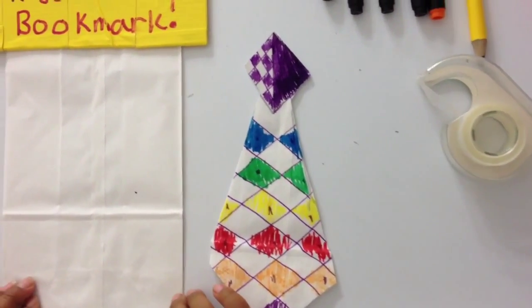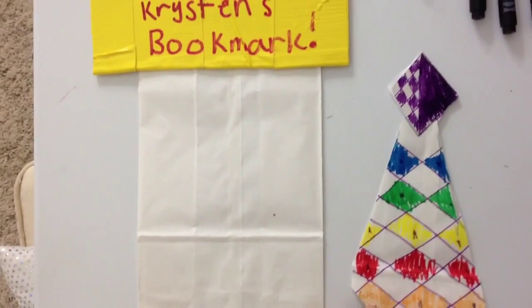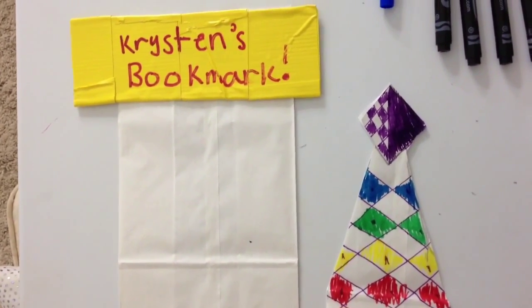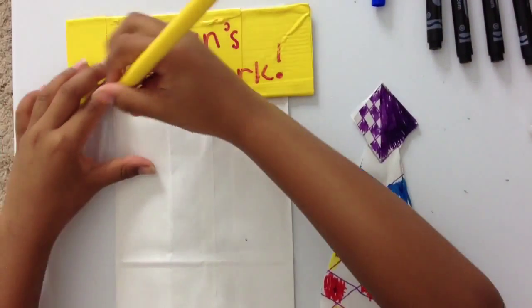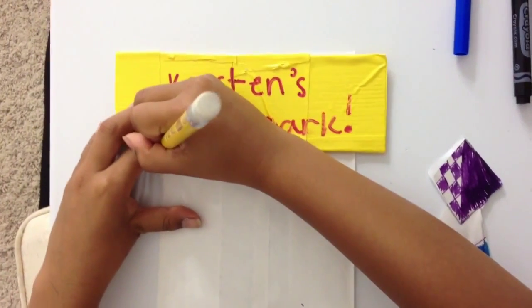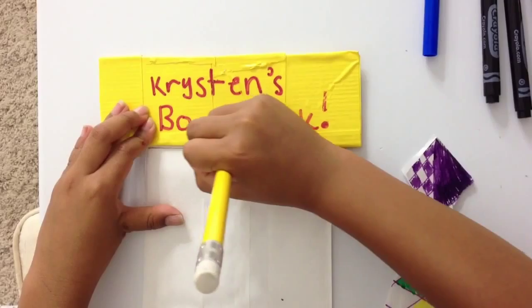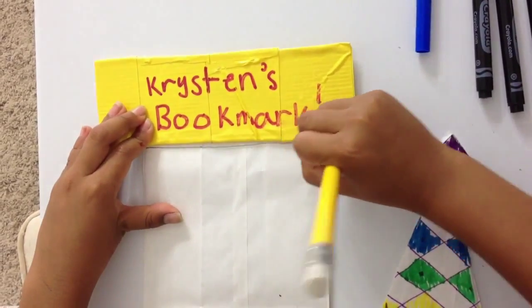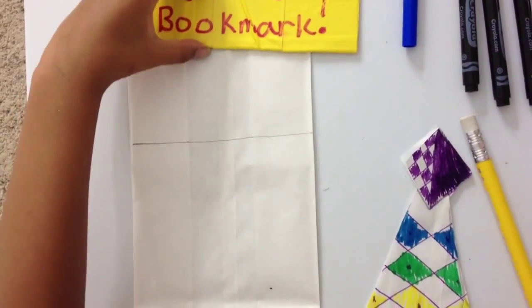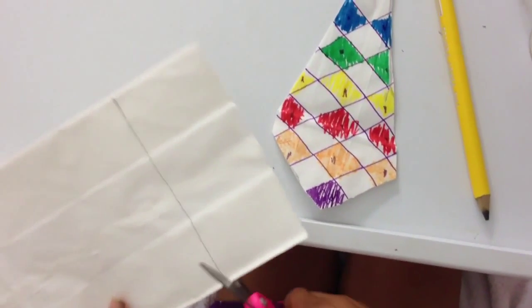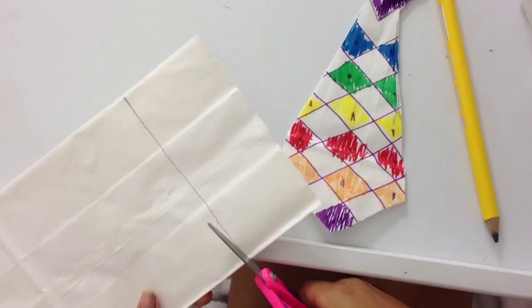Then with your second bag, use a ruler or something straight to draw a line, then cut it off like this.